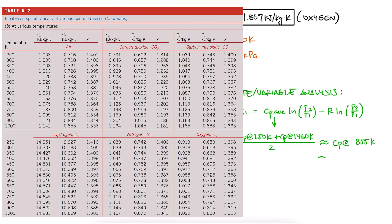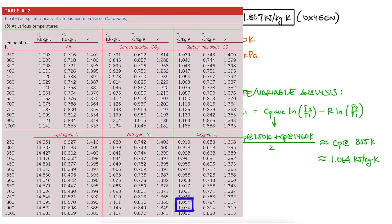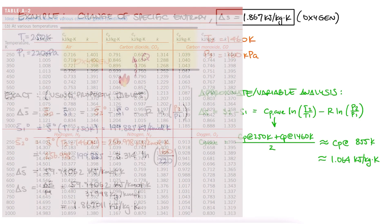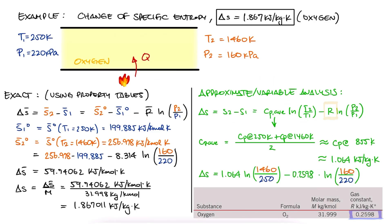We take the Cp value for 850K as 1.064, the average between 800 and 900K as a quick interpolation, and we substitute Cp, the temperatures in kelvin, the pressures, and find the gas constant for oxygen, not the universal gas constant, to find the change in specific entropy.